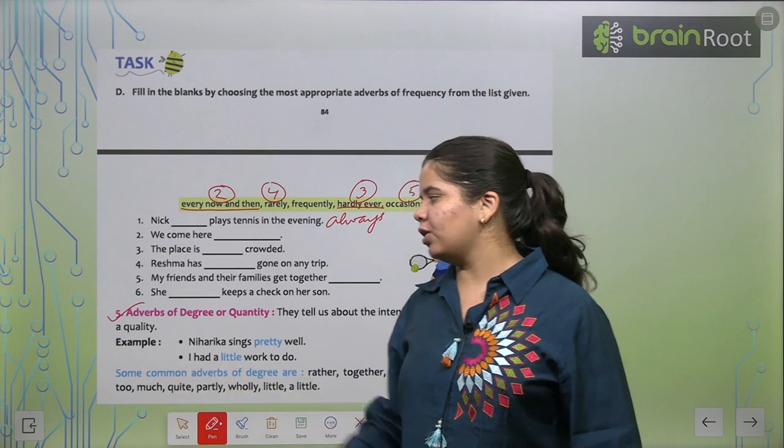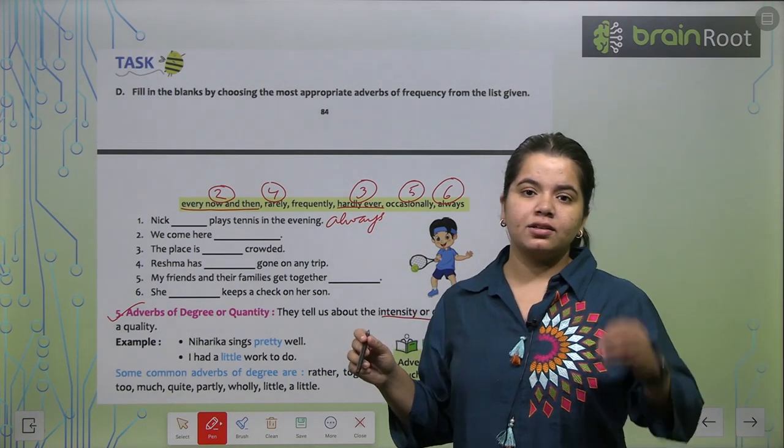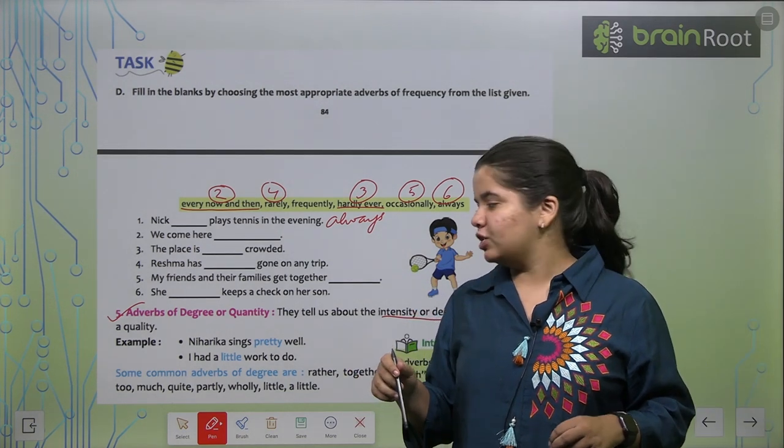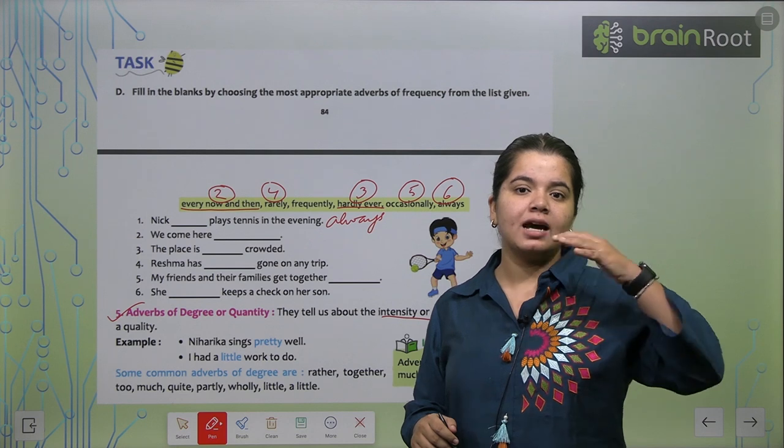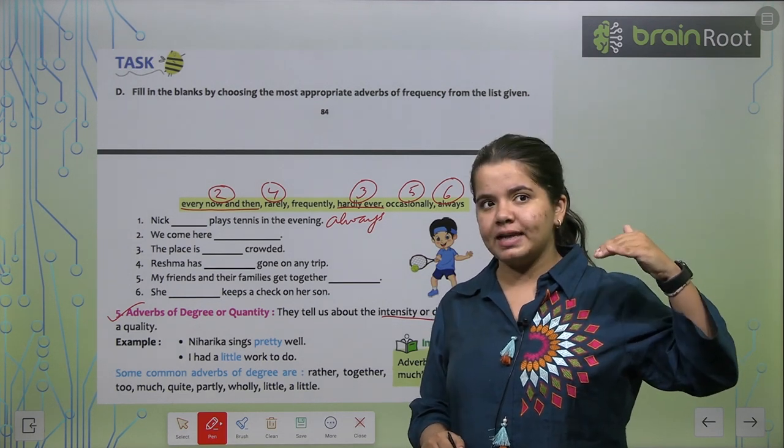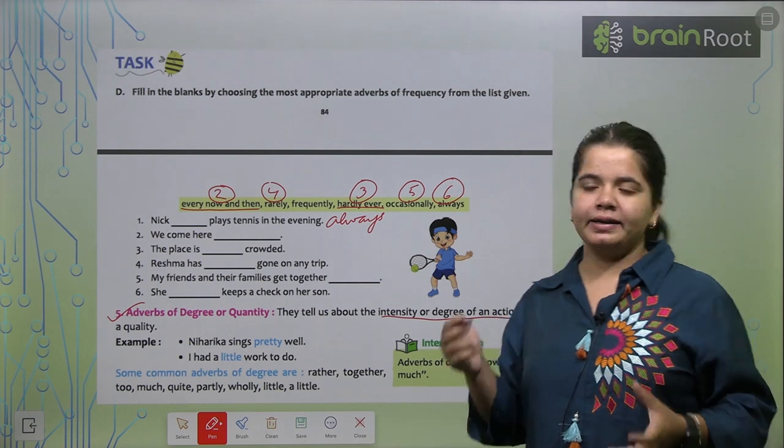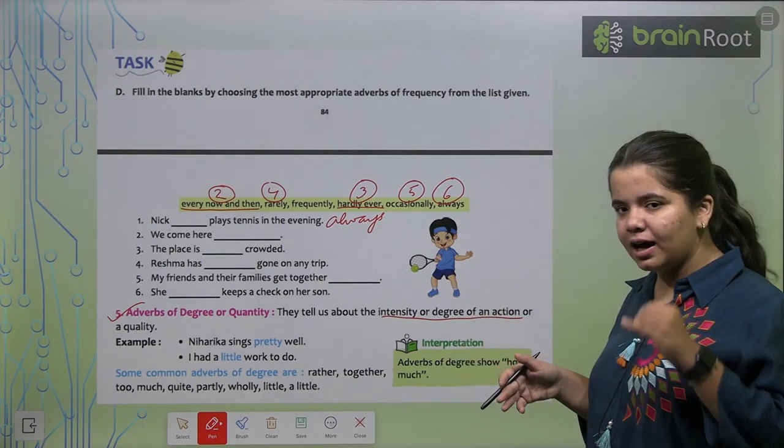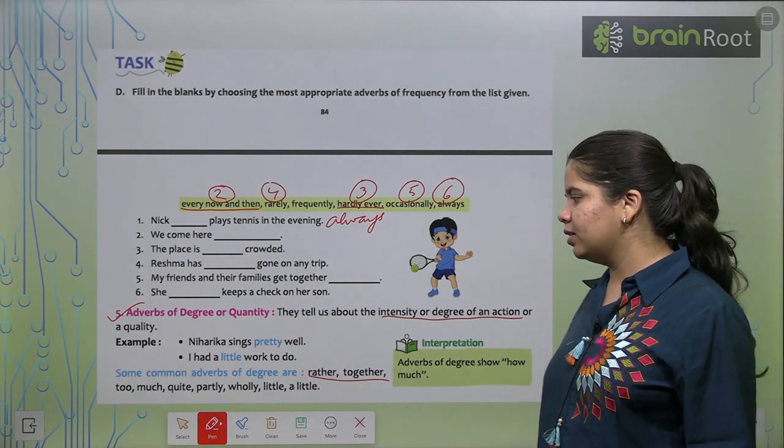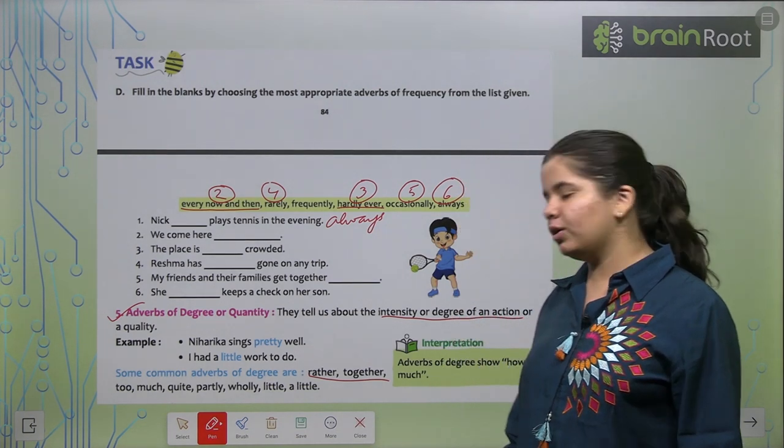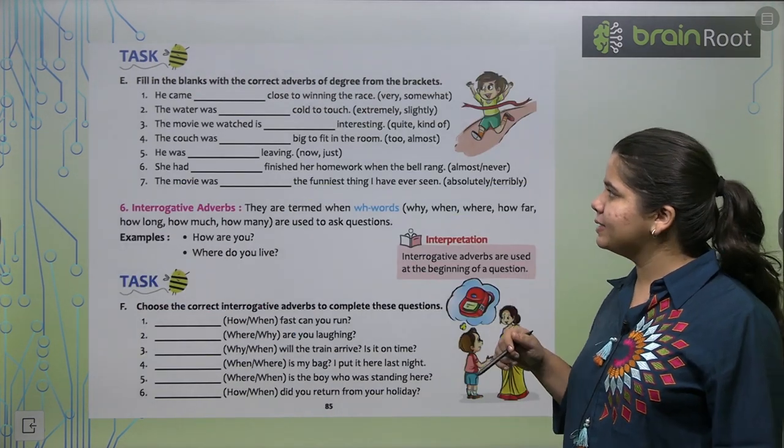Now we have the adverbs of degree or quantity. They tell us about the intensity or the degree of an action. With what intensity a particular action occurred. Like for example, I had a little work to do. So we can see that there was very little work. How much more or how much less. The words that tell us how much. Like for example, Niharika sings pretty well. So this is our adverb of degree. How good someone is at something. Examples can be rather, together, too, much, quite, partly, wholly, little, a little. These are all our adverbs of degree and quantity.